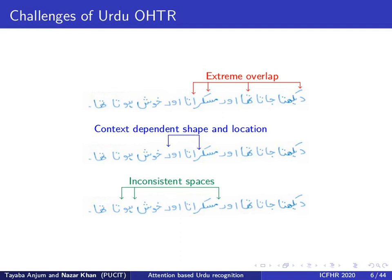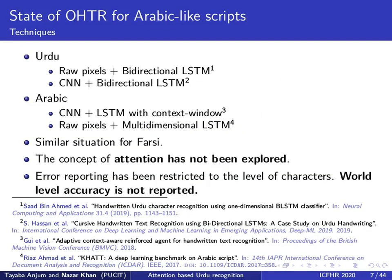However, Urdu script is related to Arabic and Farsi, so let us take a look at prior work done for these Arabic-like scripts. Previous attempts have either used raw pixels or CNN features that are then decoded using a recurrent model such as an LSTM. The horizontal nature of text is captured via bidirectional LSTMs and multi-dimensional LSTMs, which have also been employed to capture the two-dimensional features of Arabic-like scripts.